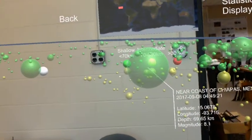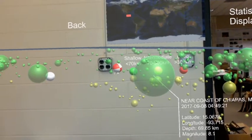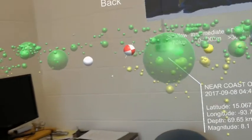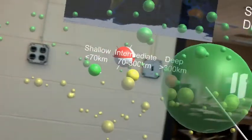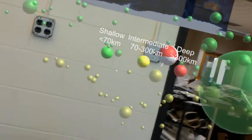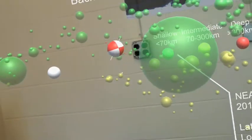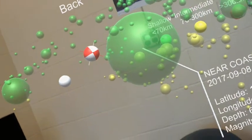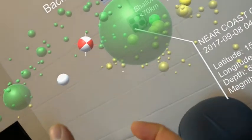So what we can also do is plot beach ball, and this is the CMT solution. Again, I'm showing it as a spherical beach ball, so it's not a lower hemisphere projection. And you can see the P and T axis, the white one is the P axis, the red one is the T axis,